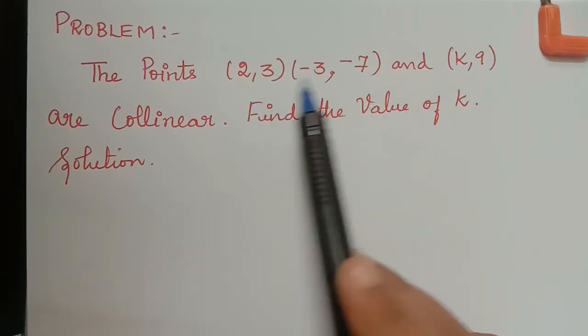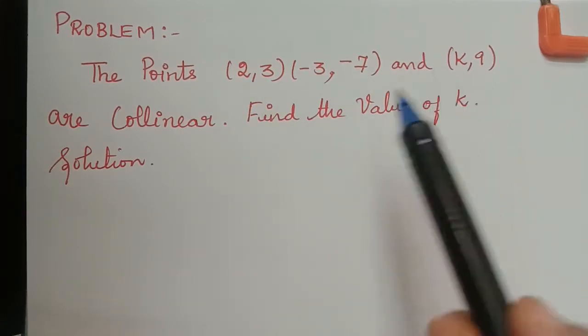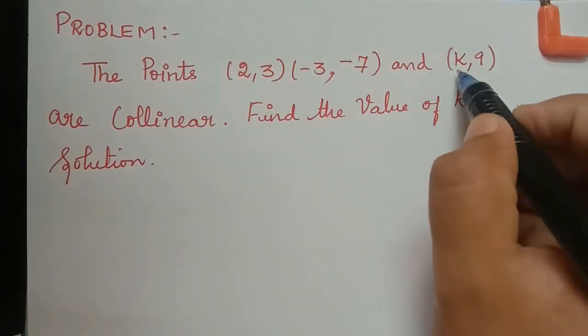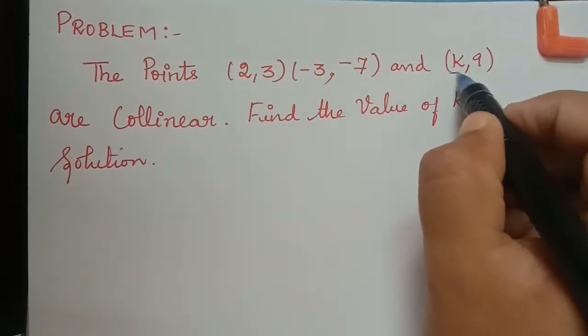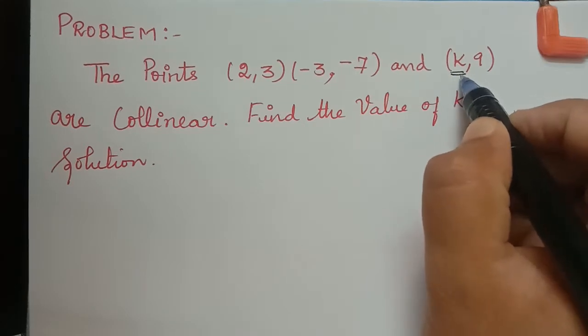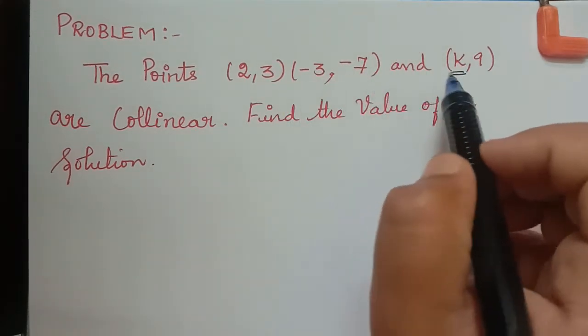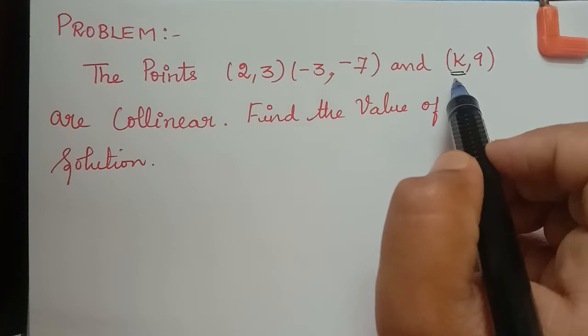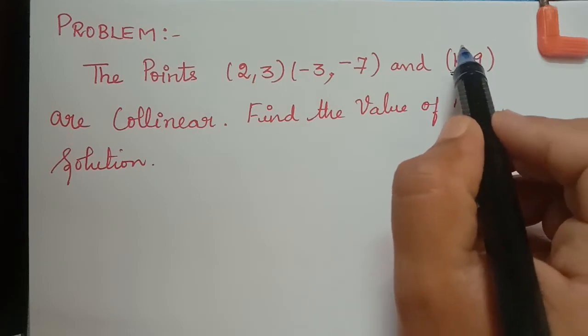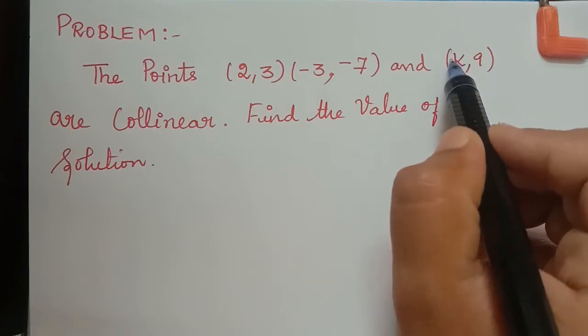So they have given three points here. One of the coordinates is unknown, so it is given as k. They are saying that the three points are collinear and asking us to find the value of k.